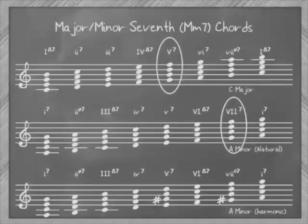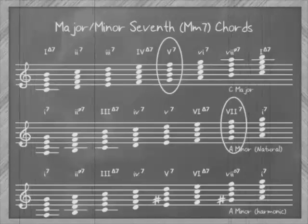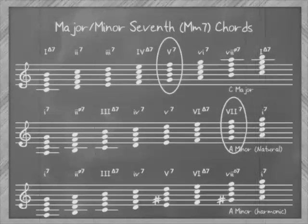The major-minor 7 chord consists of a major triad with a minor 7th, and is usually called a dominant chord, because it only occurs naturally on the 5th degree of the major scale. It's designated by the uppercase numeral with the minor 7th.